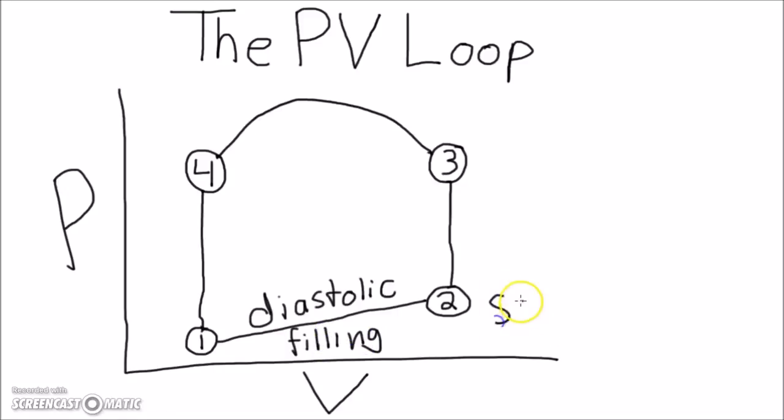From point 2, the mitral valve closes, producing the S1-LUB heart sound, and isovolumetric contraction occurs from 2 to 3.